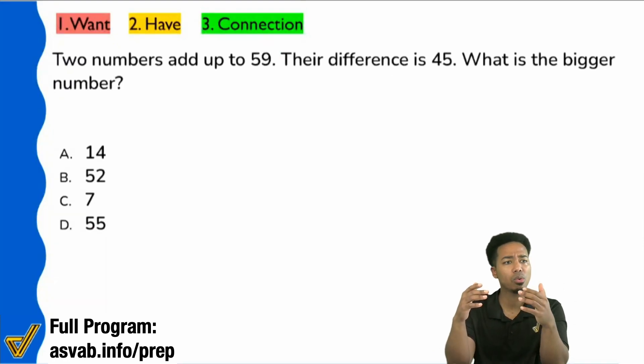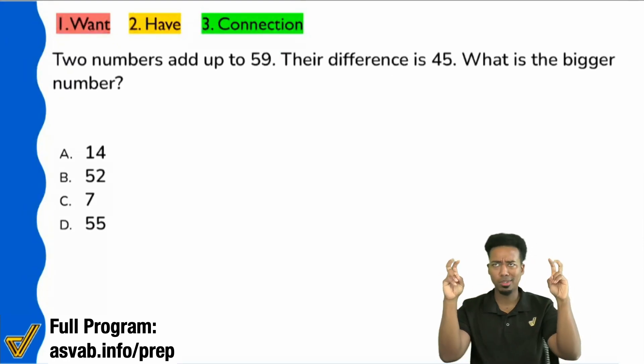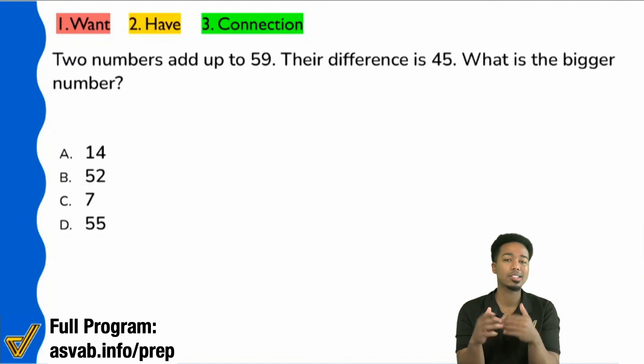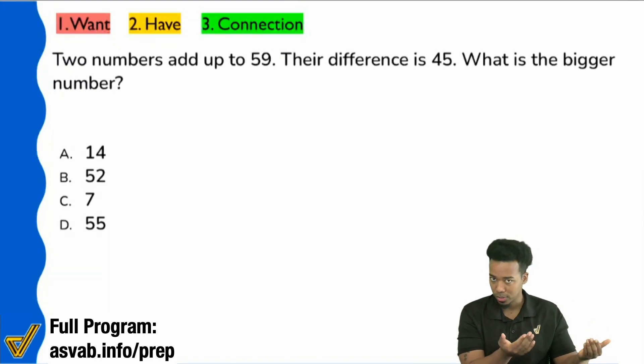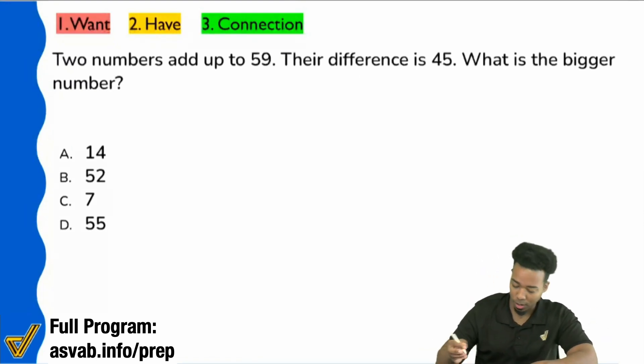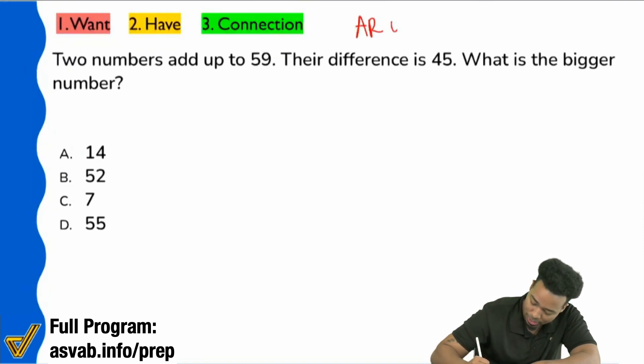One is going to take a more intuitive or common sense approach, and by common sense, I really mean just using what you see to your advantage. The other way is going to be by setting up a system of equations. So again, for those of you that are looking at this, this is arithmetic reasoning, unit seven, systems of equations.